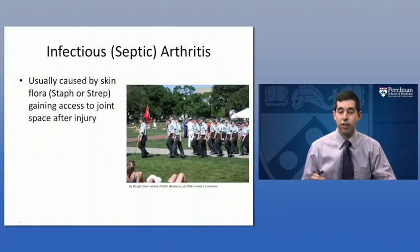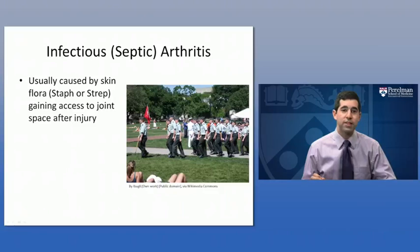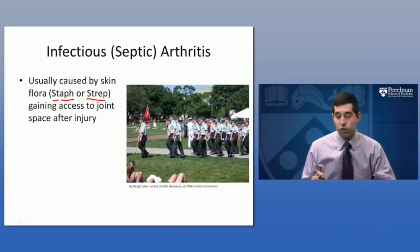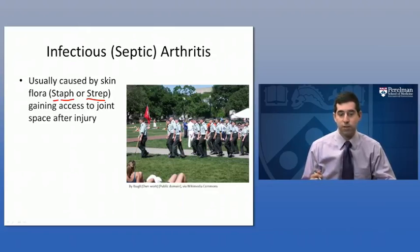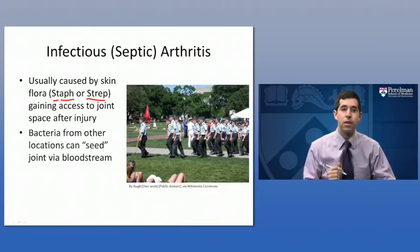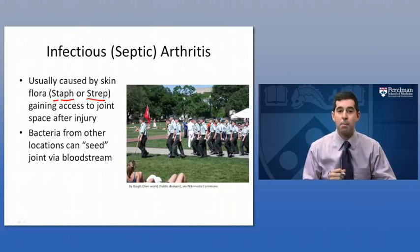To start with infectious arthritis, also called septic arthritis, this is an infection of the joint space. It's usually caused by skin flora — bacteria that normally live on the skin — which primarily include staph and strep. Usually they don't cause significant problems unless they're able to get to a place where they don't normally exist, such as gaining access to the joint space, usually after some sort of injury, abrasion, or laceration to the skin. The bacteria can also seed the joint via the bloodstream, which is more common in kids.